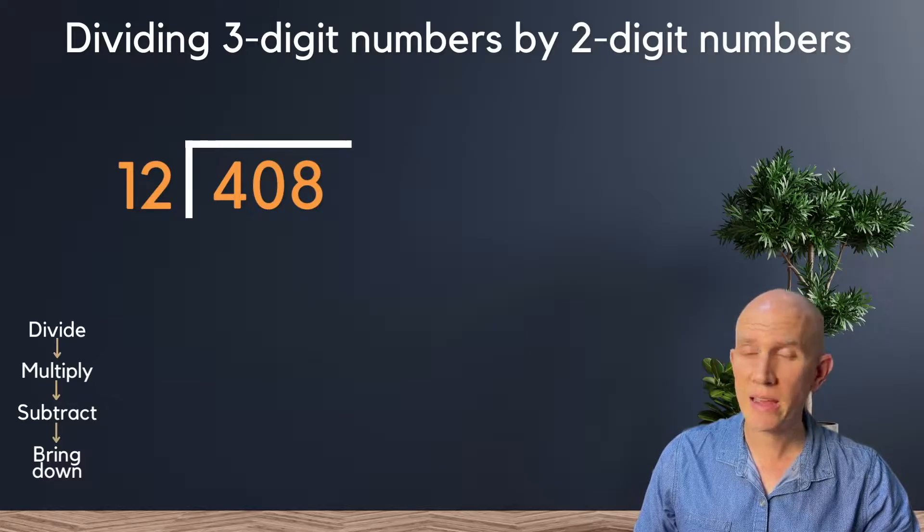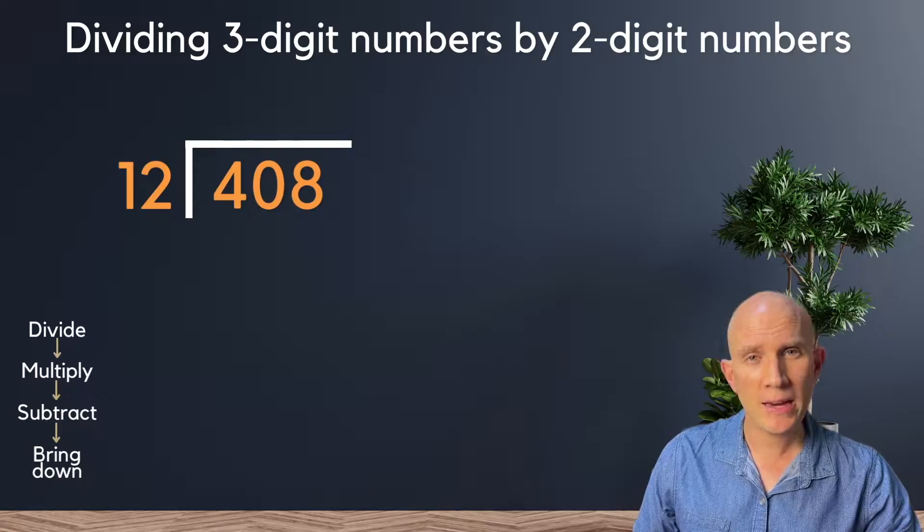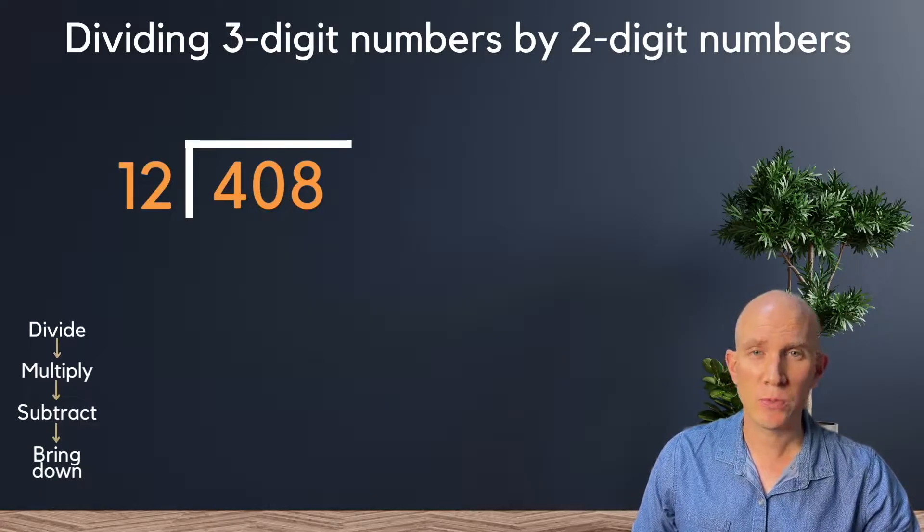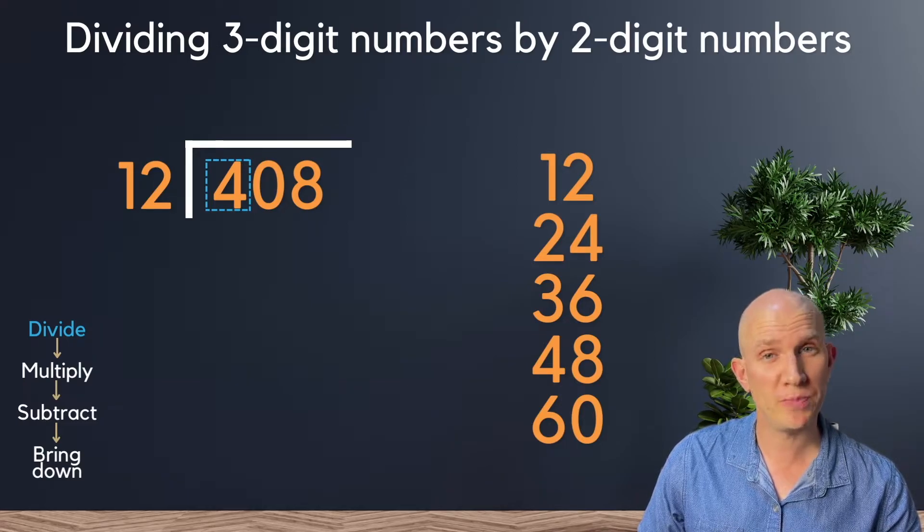What I'm talking about here is taking the 12, the divisor, and writing it out in terms of its times table, just like this. Now we can start with the first step, which is division.